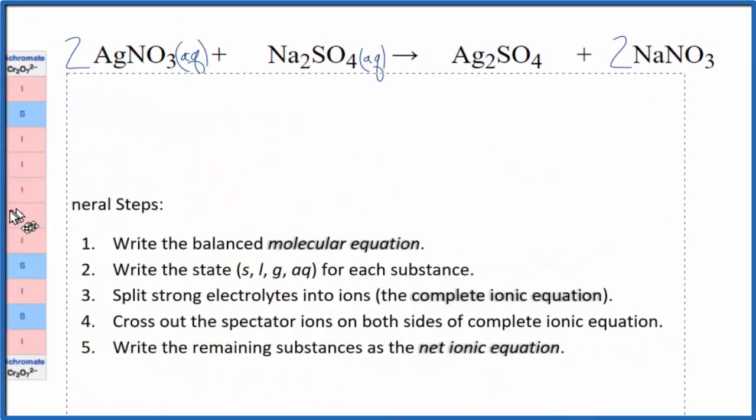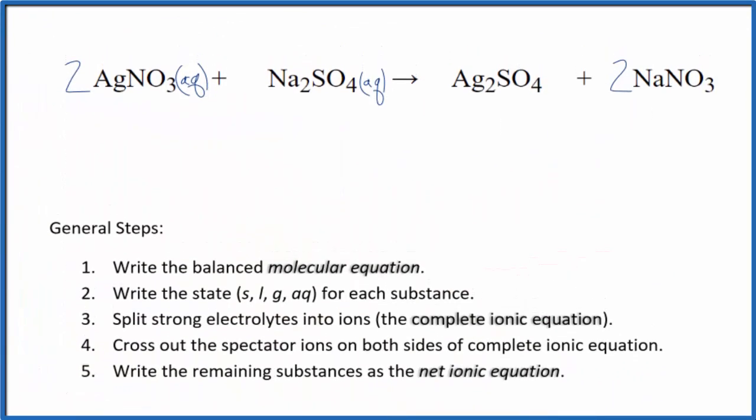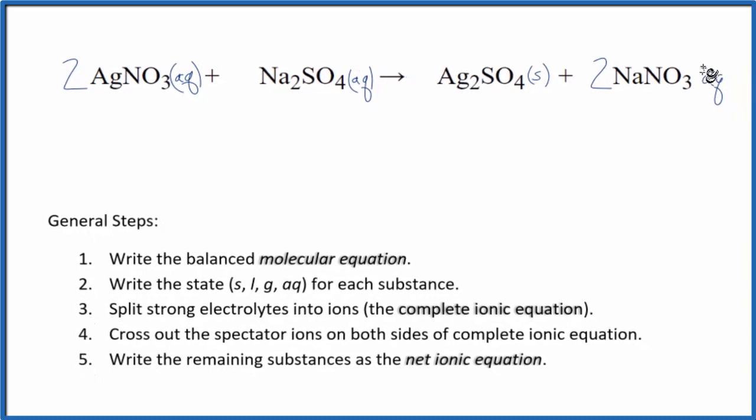So for net ionic equations, when it says slightly soluble, we consider that to mean that it's insoluble. It won't dissolve, it'll be a precipitate and fall to the bottom of the test tube as a solid. So we have a solid here for silver sulfate. Sodium compounds and nitrate compounds are very soluble, aqueous.